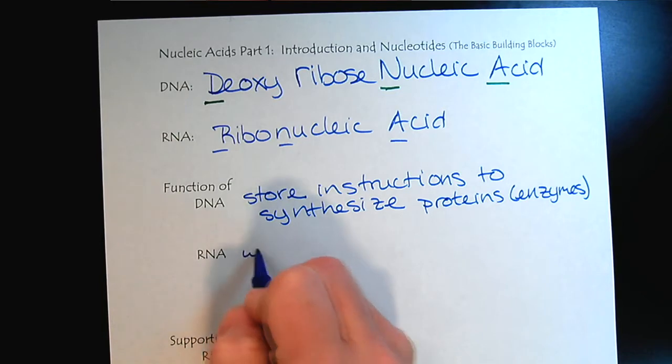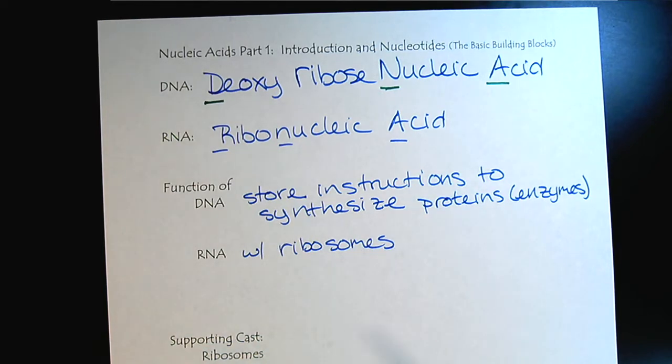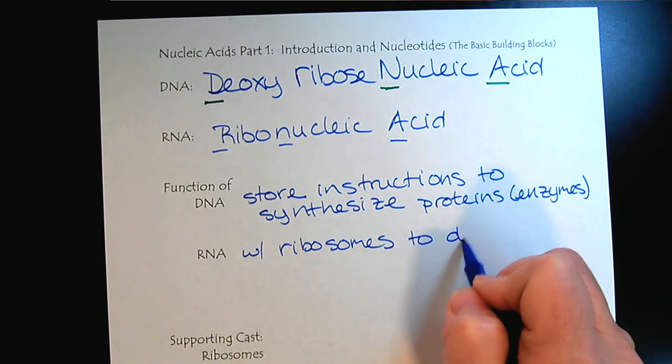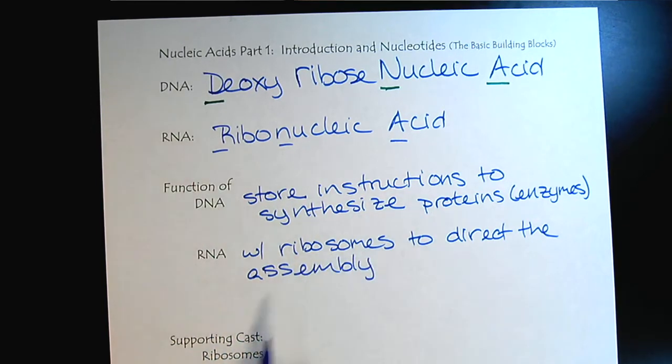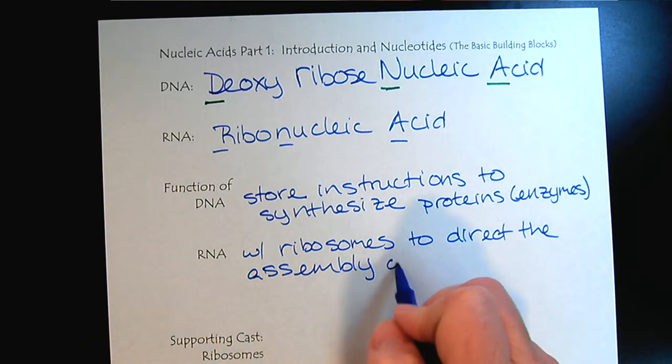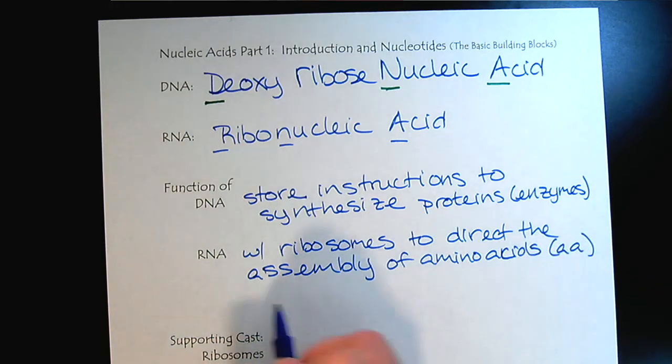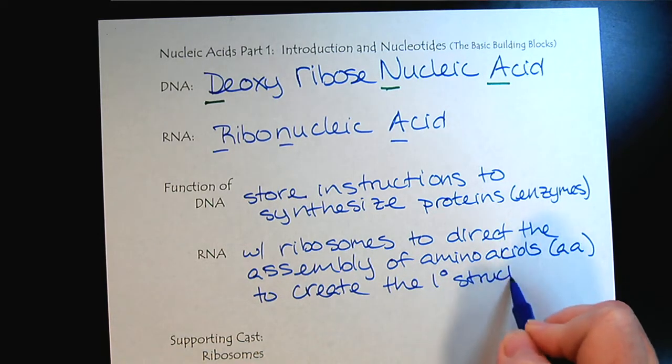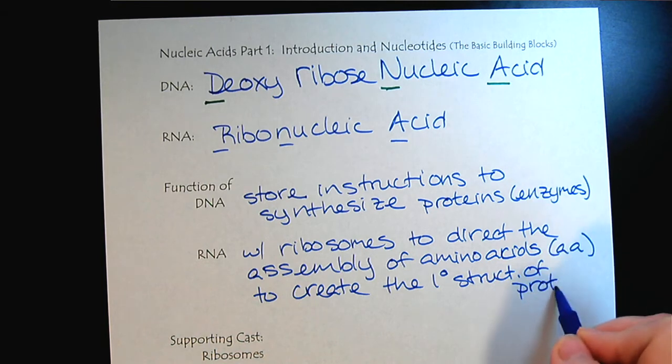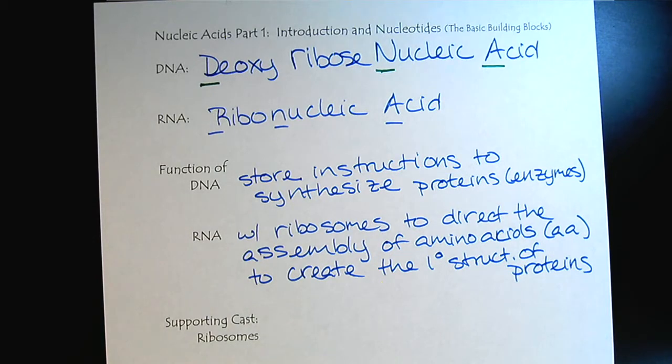The RNA works in conjunction with the ribosomes to direct the assembly of the amino acids to create the primary structure of proteins. So the DNA holds the recipe, but the RNA is the one that actually works with the ribosomes to build the proteins.